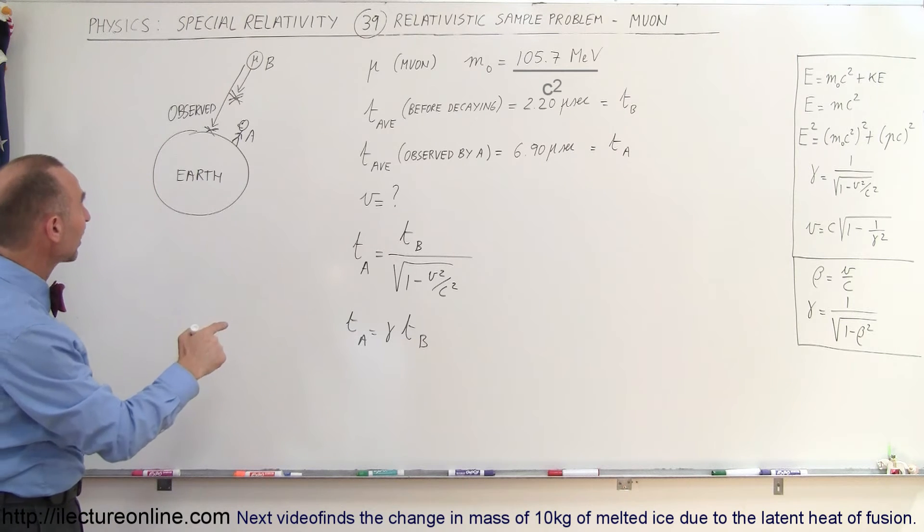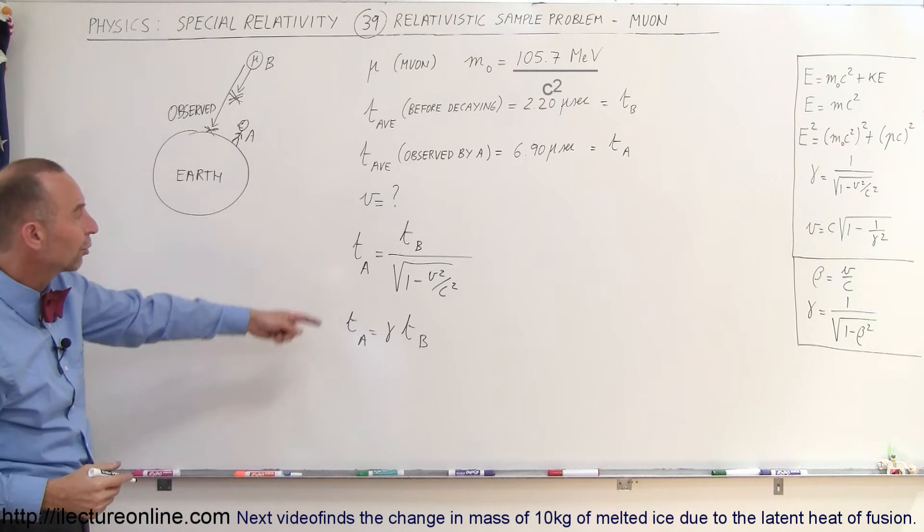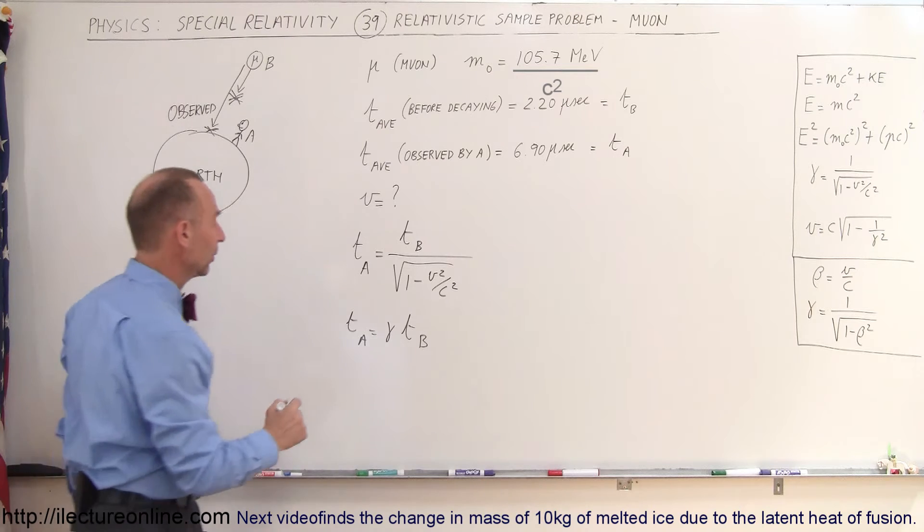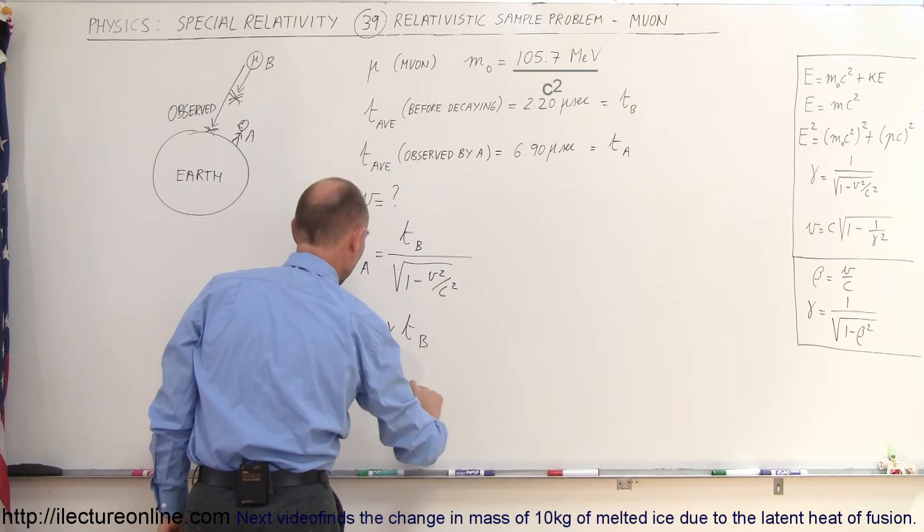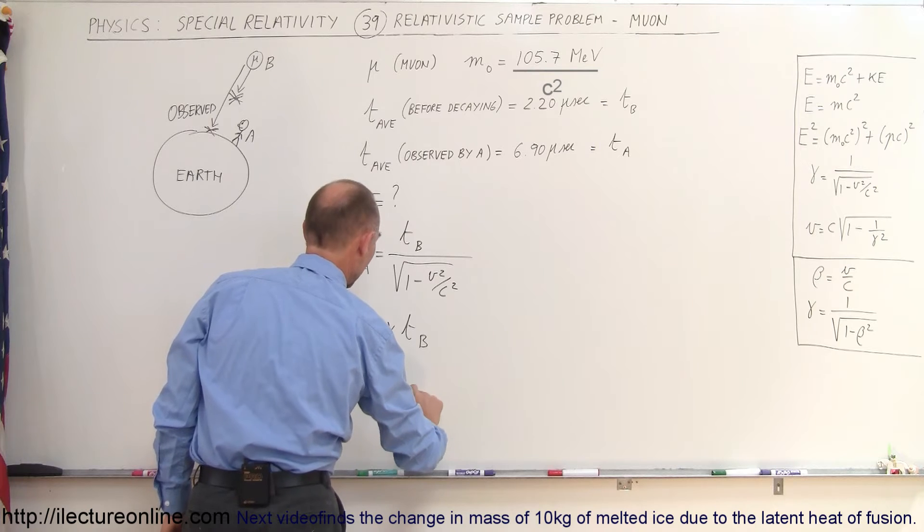So, can we find the Lorentz factor based upon this? Of course we can, because we have the relative time here. So, we can say that the Lorentz factor is equal to the time observed by A divided by the time observed by B. So, in this case...